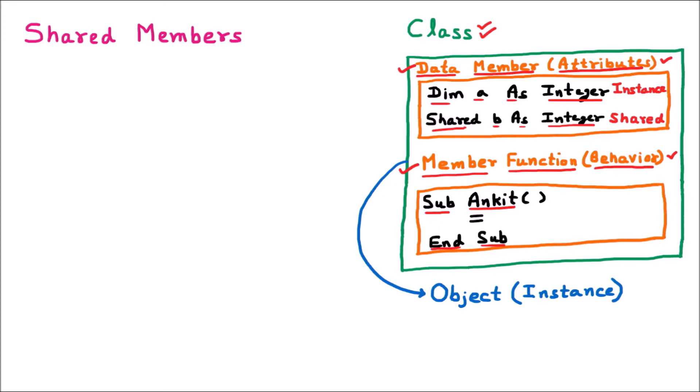To access the class we need an object, also called an instance. Now, data members have two categories. The first category is when we declare variables in the normal way — like 'Dim a As Integer', 'Dim a As Double', or 'Dim a As String'. These are called instance variables.